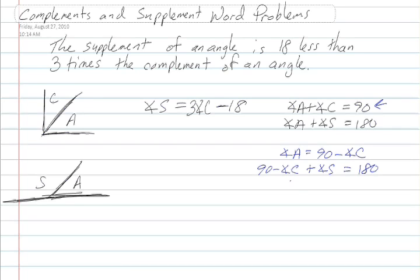By rearranging this expression, we get angle S minus angle C equals 90 degrees.